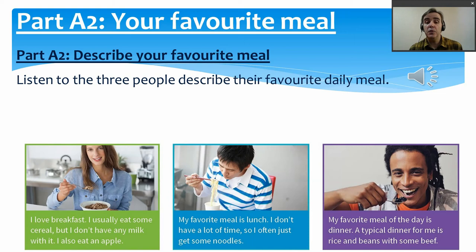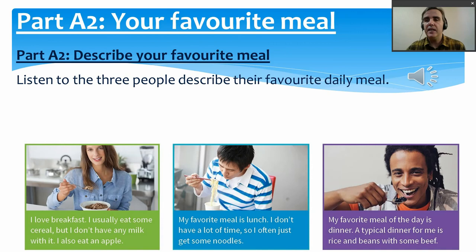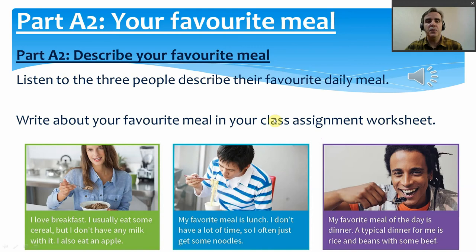The third man said: 'My favourite meal of the day is dinner. A typical dinner for me is rice and beans with some beef.' He has told us his favourite meal and what he eats. These are three good examples. Now you are going to do the same — in your class assignment worksheet, write about your favourite meal of the day, choosing either breakfast, lunch, or dinner, and try to explain what you eat or why. Now is a good time to pause the video.